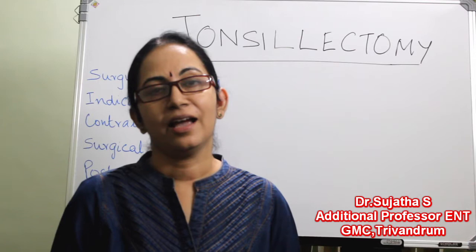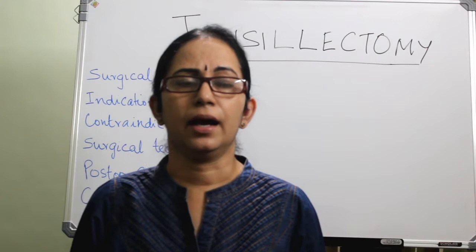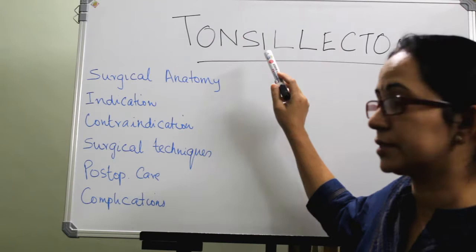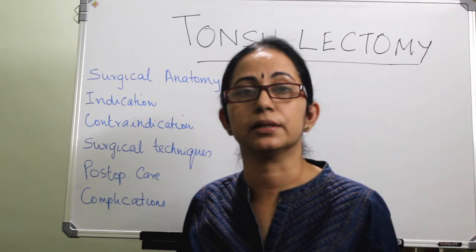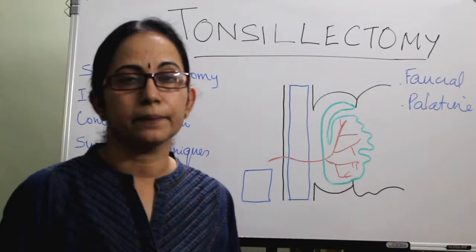Tonsillectomy is one of the commonest surgeries done in India, either alone or in combination with an adenoidectomy. Usually in children, we do adenotonsillectomy in a single sitting. In this class, I will explain tonsillectomy under the headings of surgical anatomy of tonsil, indications, contraindications, and surgical techniques. The commonest technique we prefer is the dissection and snare method. Post-operative care and complications will also be covered.